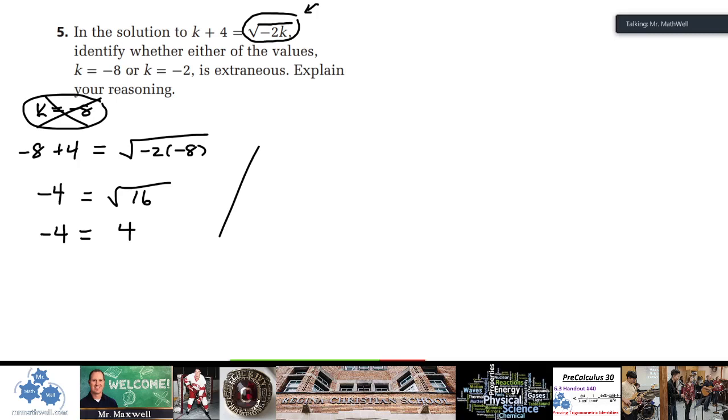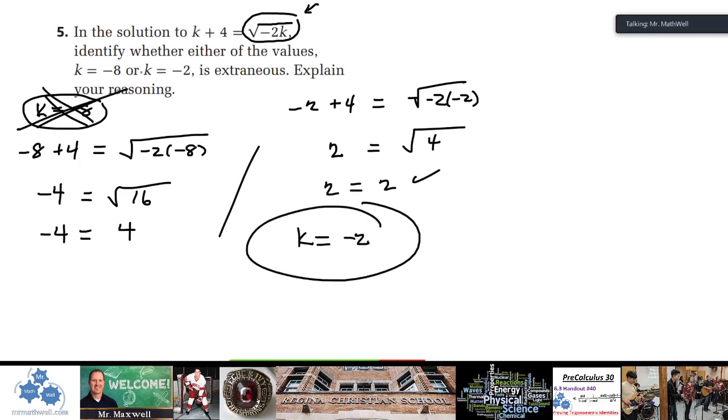So k = -8, I believe, should be extraneous. All right, so that does check out. k = -8 is extraneous. Also, if you put in k = -2, well -2 + 4 = √(-2(-2)). So this would be positive 2 over here. And this would be the square root of positive 4. So 2 = 2 does check out. So k = -2 is okay. So that's an example where you would need to check your solutions. And even though they both look like hey, this is probably okay, you would be able to determine one is extraneous. And again, extraneous means it's extra. It's outside of allowable solutions.